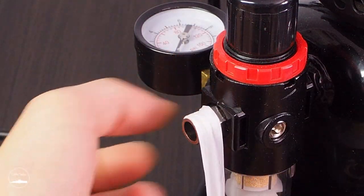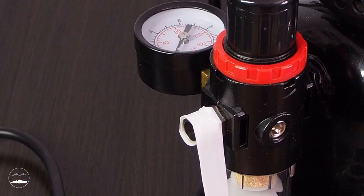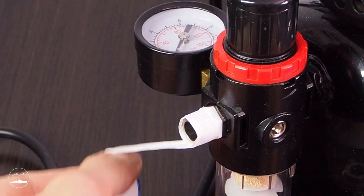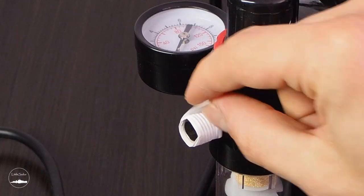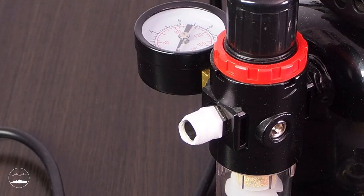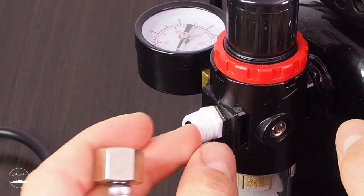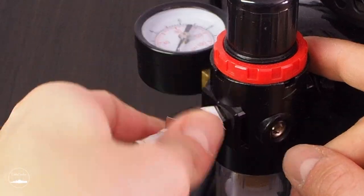Although there are gaskets inside the connections, it's good using teflon tape to seal the connection thoroughly. Make about three to four rounds and then tighten the hose securely until it stops.